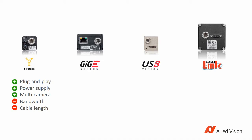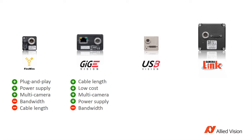GigE Vision is a machine vision standard for Gigabit Ethernet. You can bridge up to 100 meters with just one cable. Because Ethernet is a widespread standard in the IT industry, components are easy to source at an affordable cost, and it's well suited to network multiple cameras in a system. Power over Ethernet is supported by more and more cameras, but you need an appropriate interface card on the host side. GigE Vision has a slightly higher bandwidth than Firewire — 100 megabytes per second.